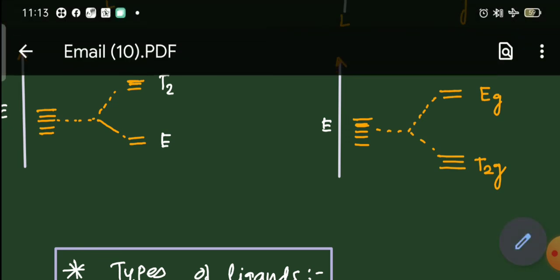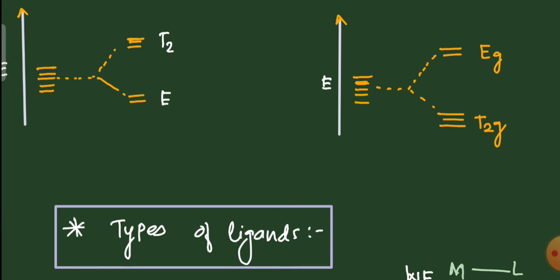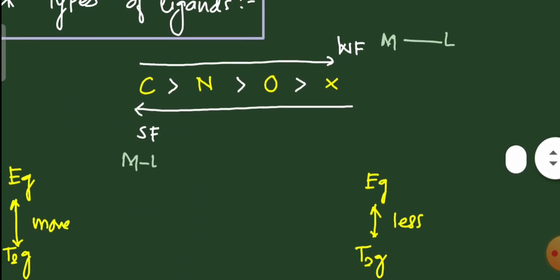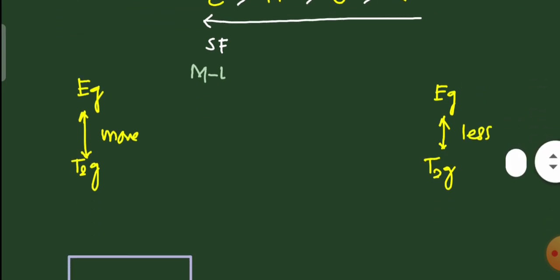In octahedral complexes, axial orbitals (eg) undergo repulsion and raise their energy, while in tetrahedral complexes, the non-axial t2 set raises its energy because ligands approach from those directions. The splitting also depends on ligand type: according to the spectrochemical series, carbon donors are strong field and form strong metal-ligand bonds giving large Δo, while halogen donors are weak field giving small Δo. Strong field ligands give larger separation between eg and t2g; weak field ligands give smaller separation.